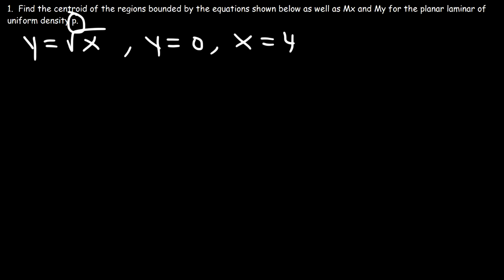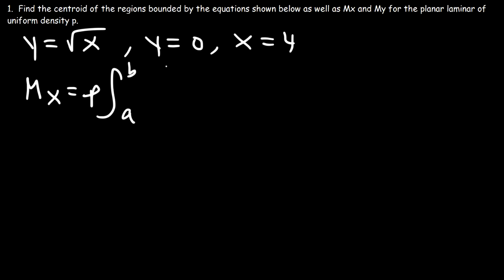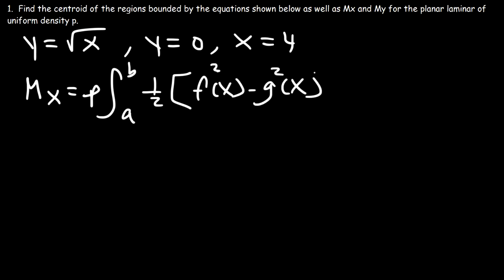Rho represents the surface density, which is mass per unit area, as opposed to mass per unit volume. So let's start by finding the values of mx and my in terms of rho. The formula we need: mx equals rho times the integral from a to b of one-half times f(x) squared minus g(x) squared dx.